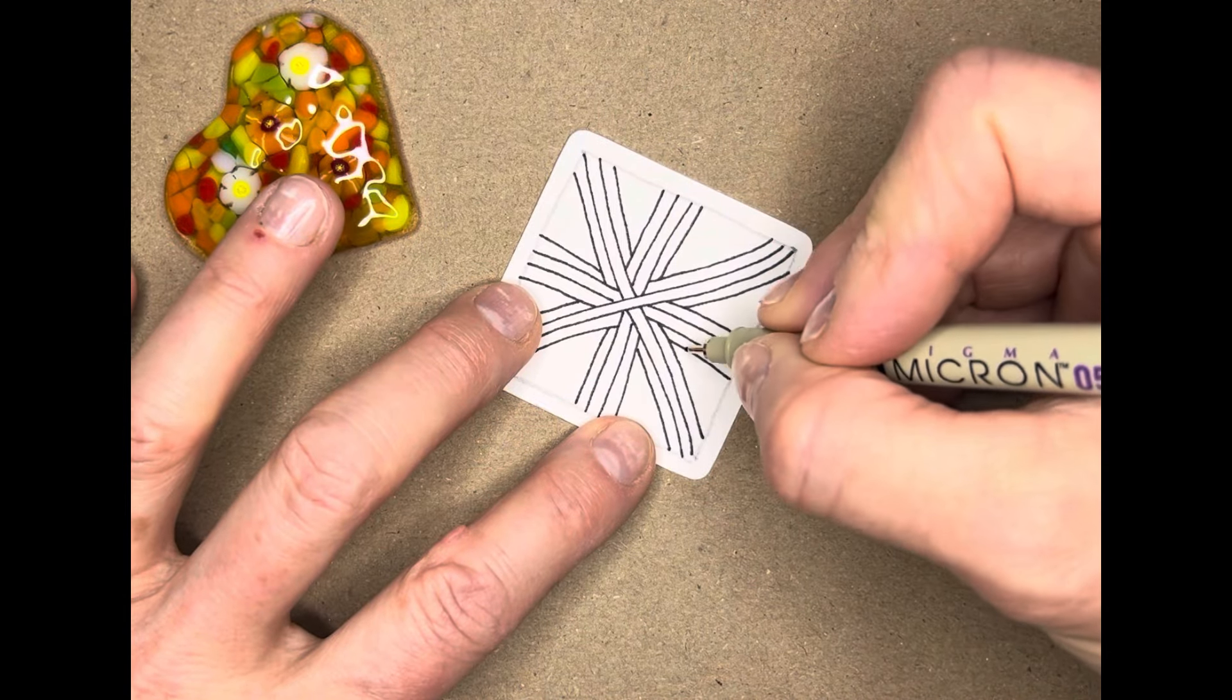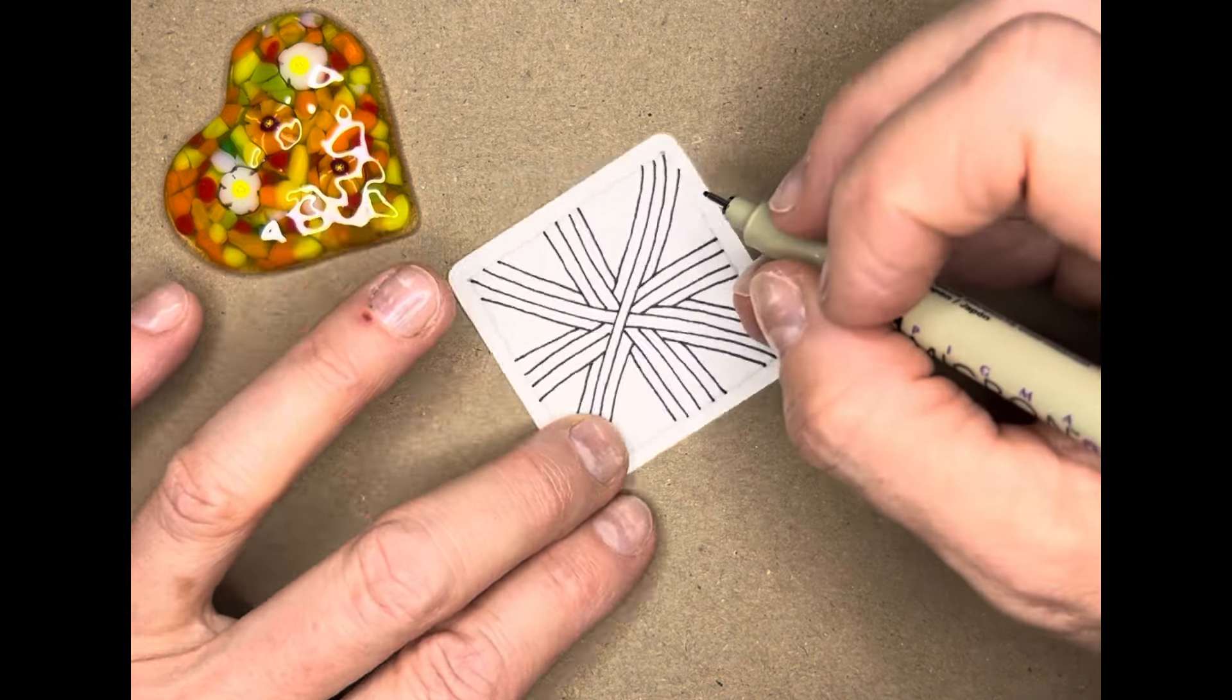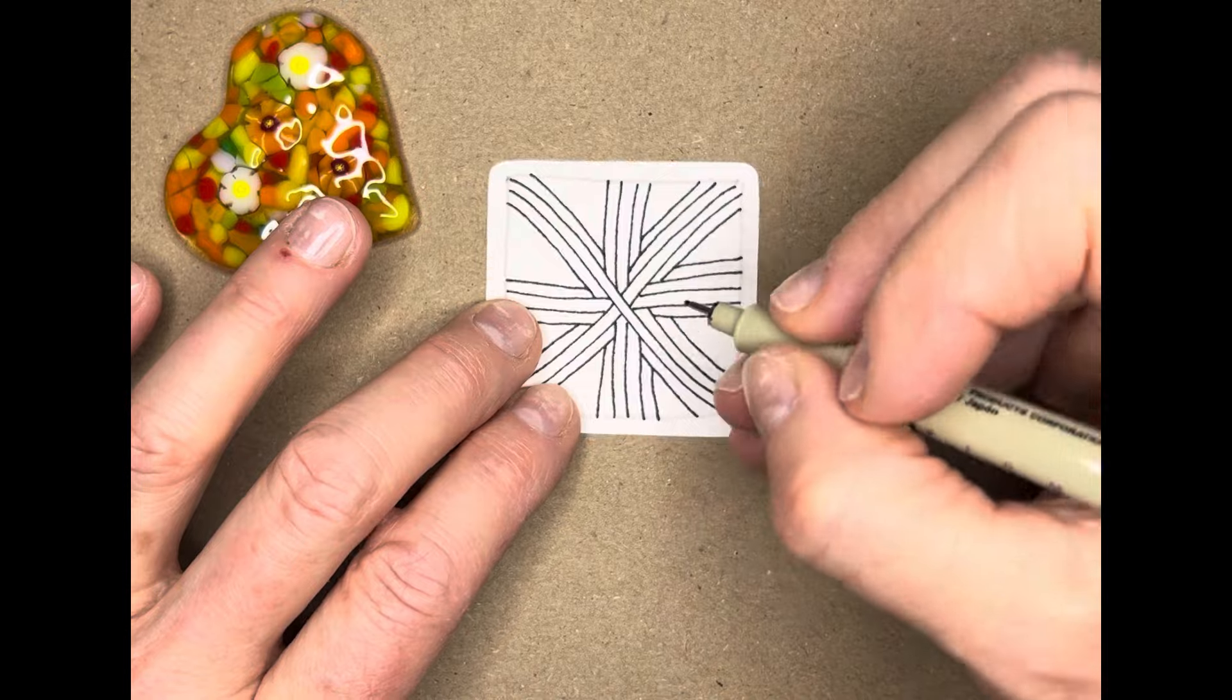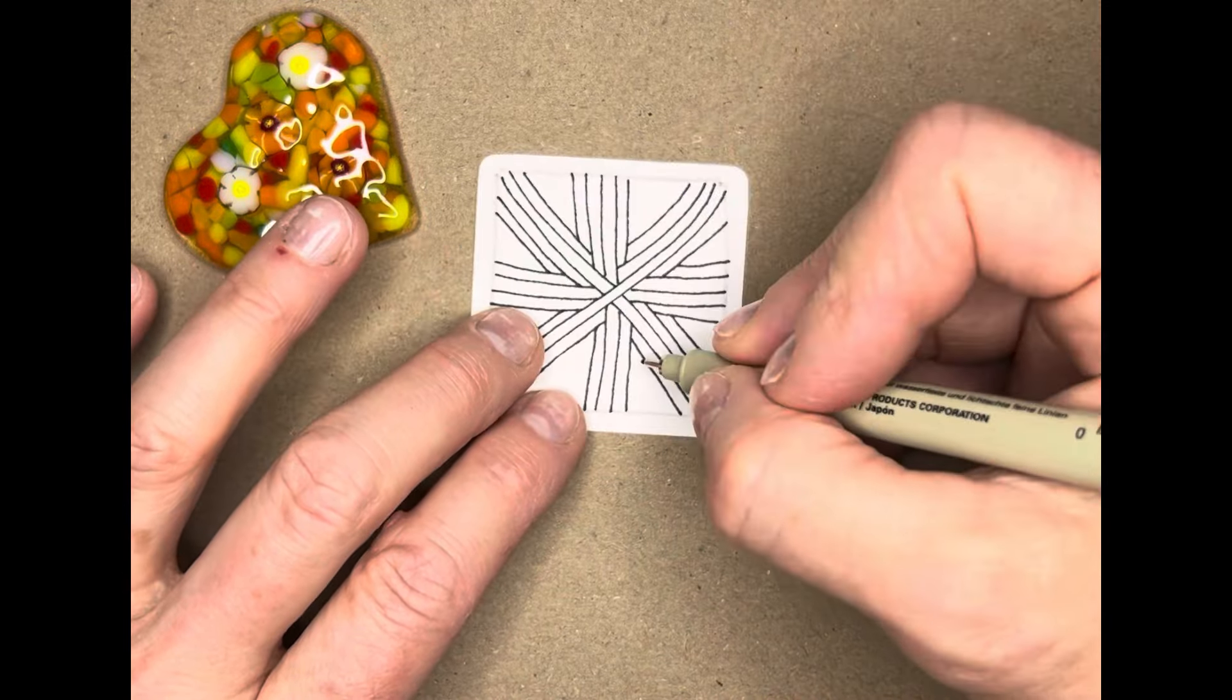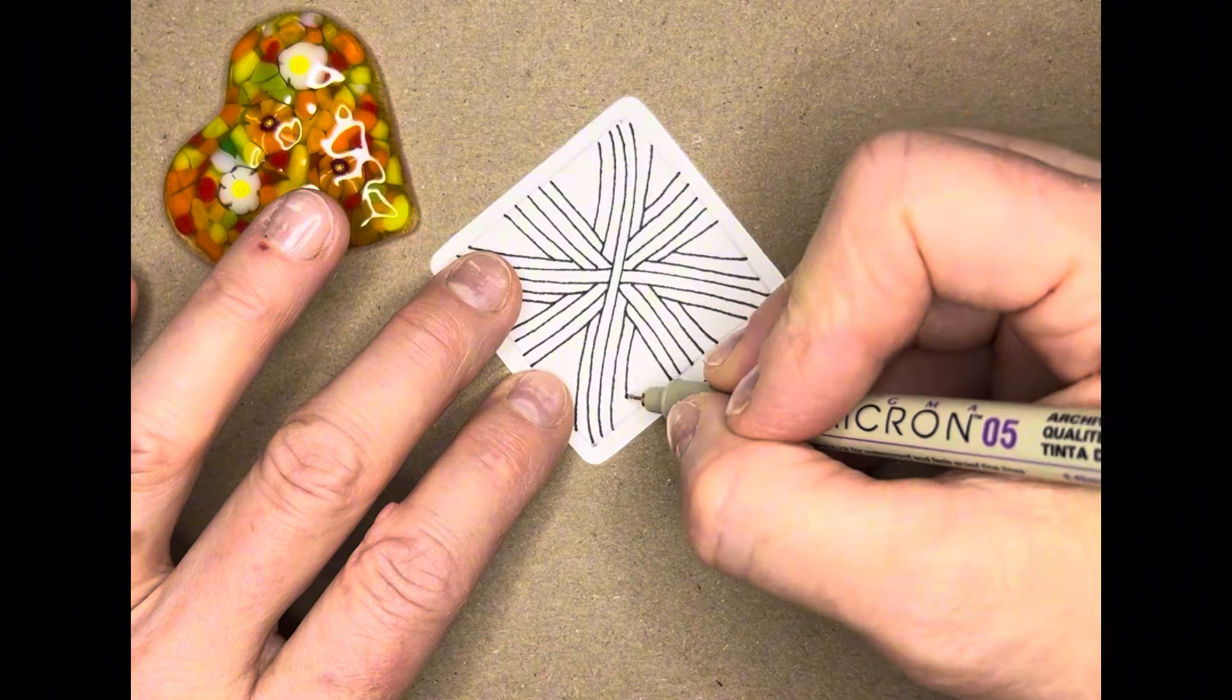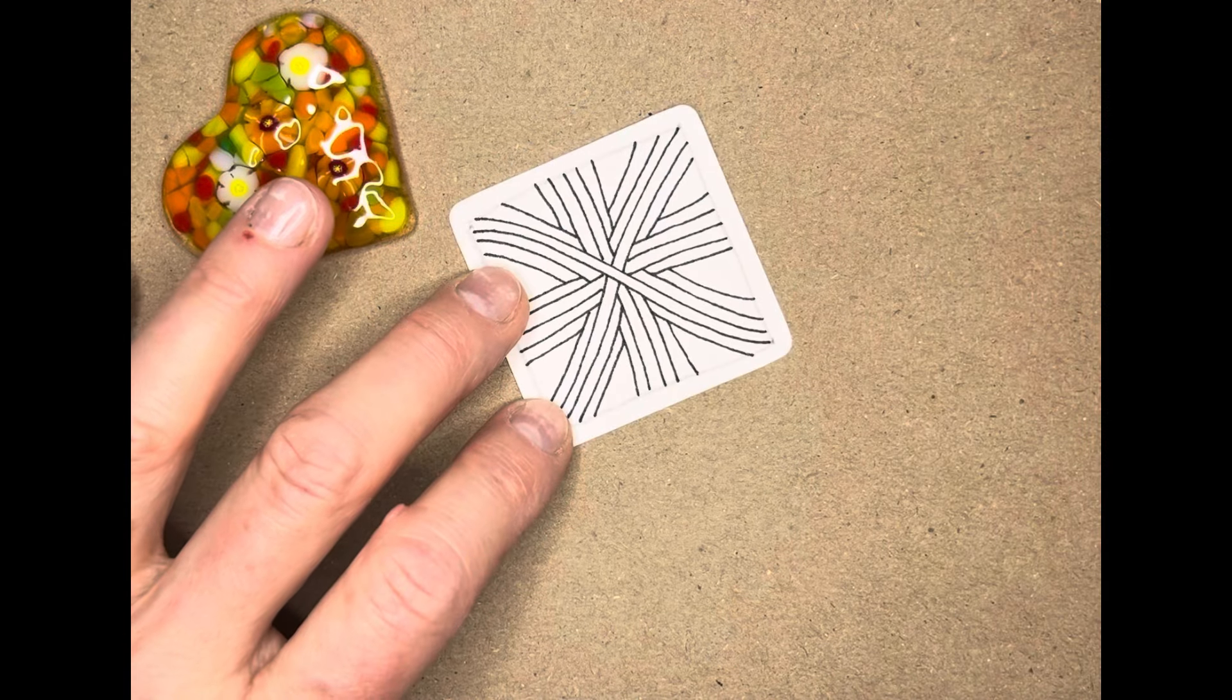And now I can go back. And we basically start building up these layers where it looks like you've plotted these sections together. Always approach Zentangle with the thought of you're just drawing this one line at a time. And the next line will follow on from that.